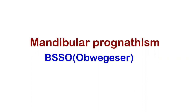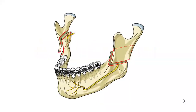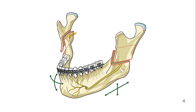Different orthognathic surgical procedures are used for the correction of mandibular prognathism. In this video, we will explain the bilateral sagittal split osteotomy as described by Obwegeser. This osteotomy divides the mandible into two condyle-bearing segments and a large segment consisting of the mandibular body including teeth and chin. This is a universal procedure that can be employed for all mandibular movements, and here we will show the correction of mandibular prognathism.